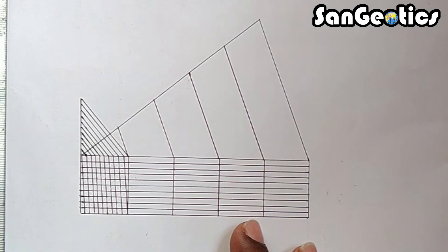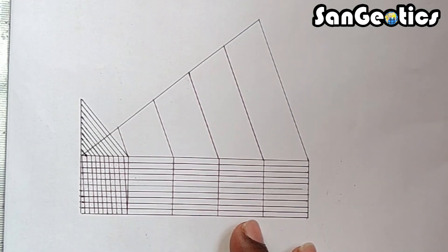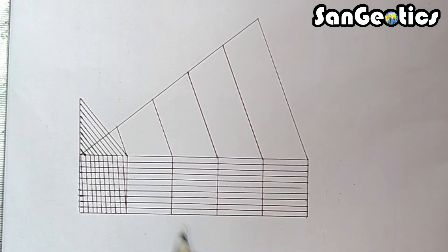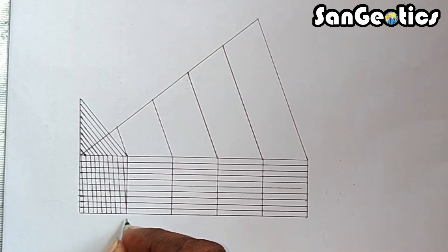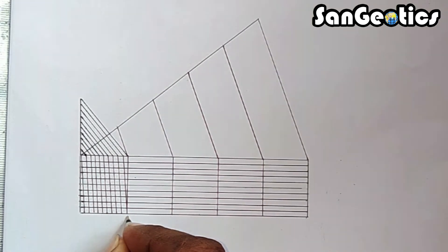Now, we are labeling the primary and secondary divisions. 0 is written not at the left of the scale, but to the right at the secondary divisions.